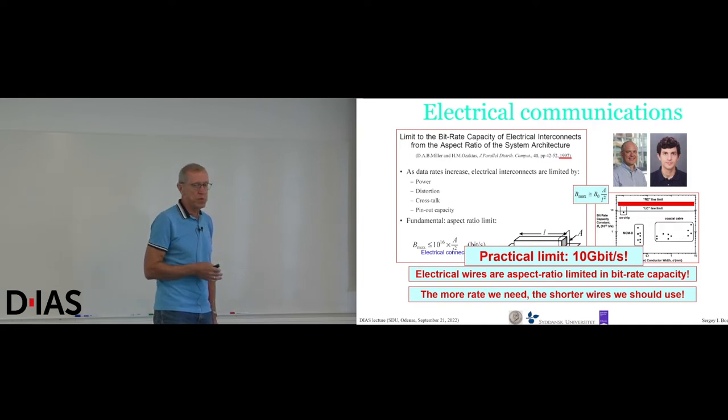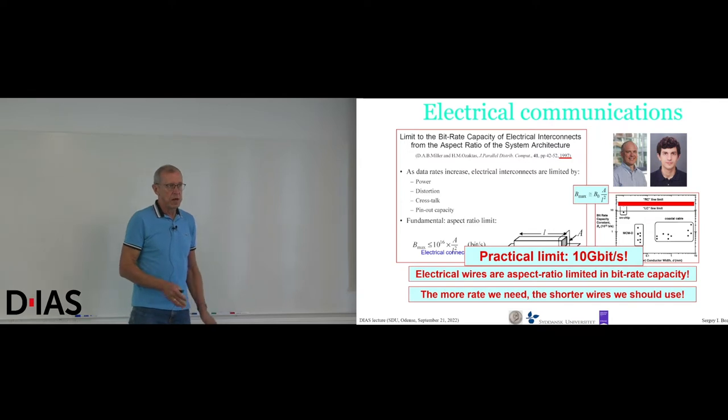And this is essentially 10 gigabit per second, simply because that more rate, we should use shorter wires. And that's why actually we switch to the fibers. So practical limit of this 10 gigabit per second, and this is the limit that is used in all modern iPhones, laptops, whatever. Even supercomputers, if you take individual processors.